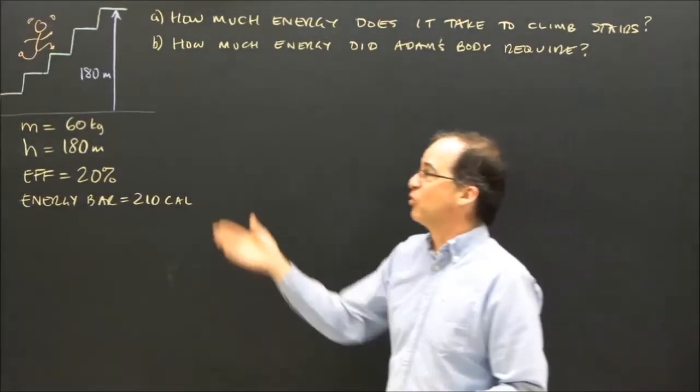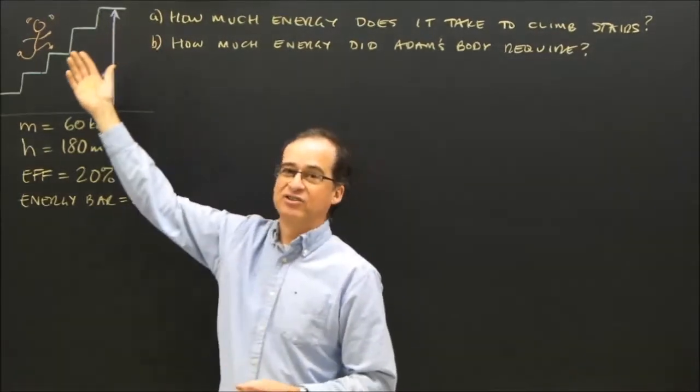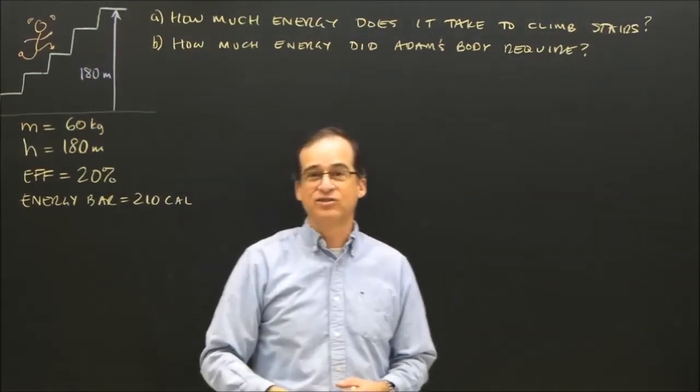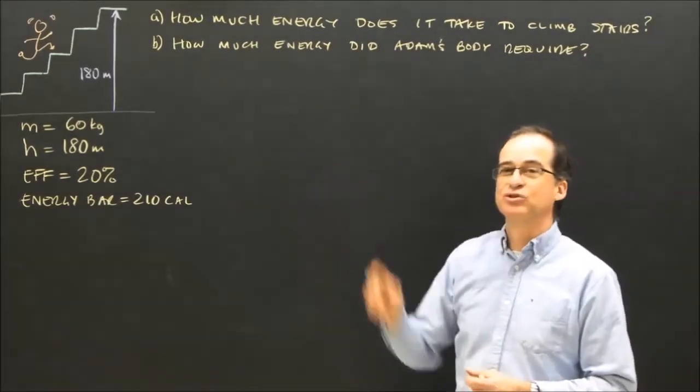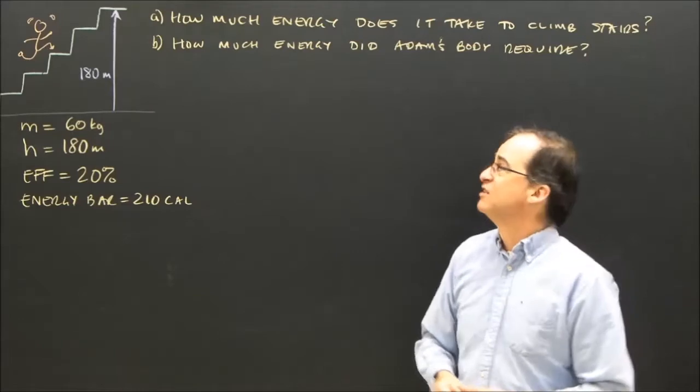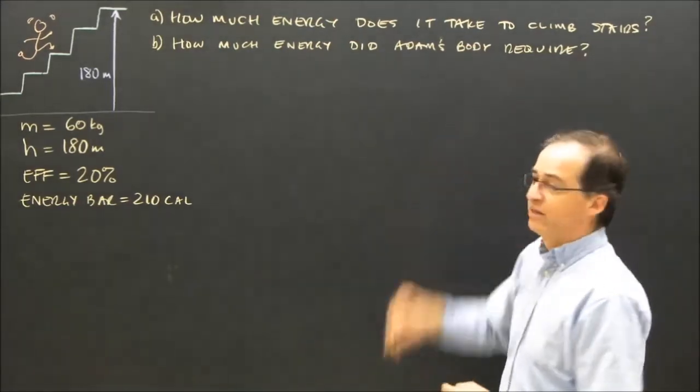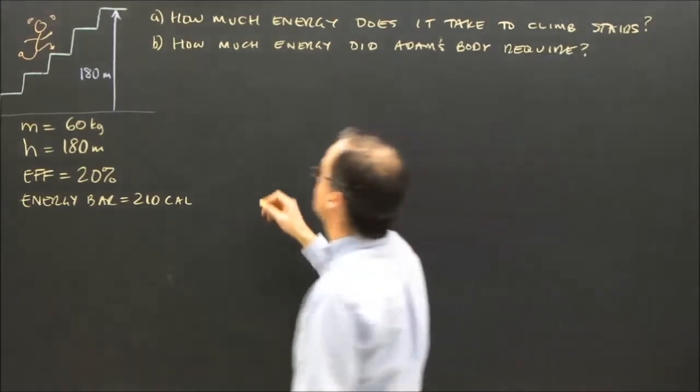And what you've got to realize is the work he did was equal to gravitational energy. If Adam's at the top of the stairs and has 1,000 joules of gravitational energy, then it must have been 1,000 joules of work that he did to get up there. So to figure out how much it took to climb the stairs, I've got to figure out his gravitational energy.